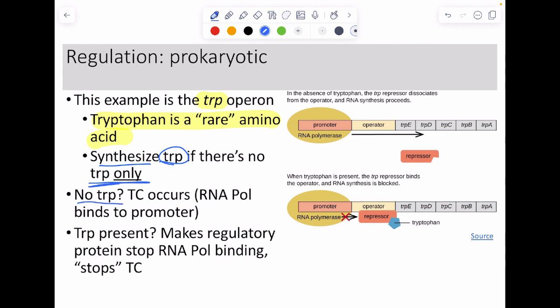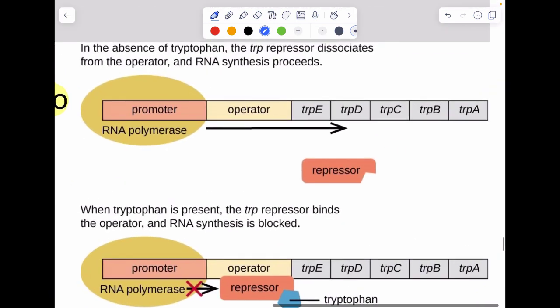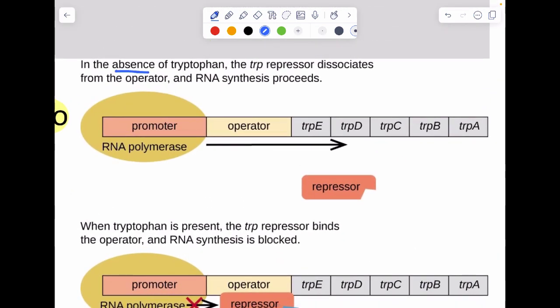What that means is we'll turn on the genes to make tryptophan if there's no tryptophan around. If there's no tryptophan, we get transcription. That also means if there's tryptophan present, then we're going to stop transcription. And that's what this diagram here is trying to show us.